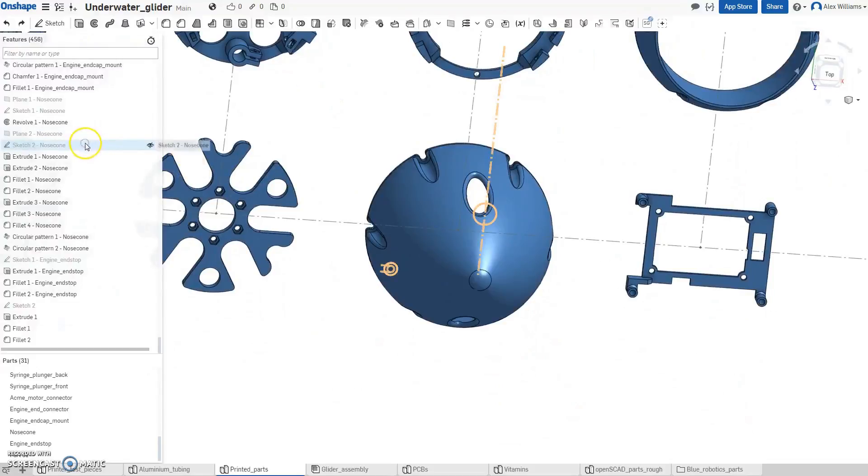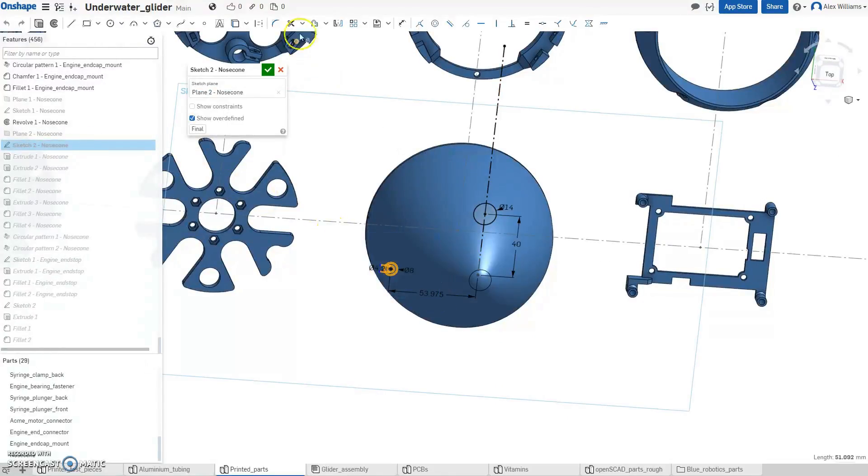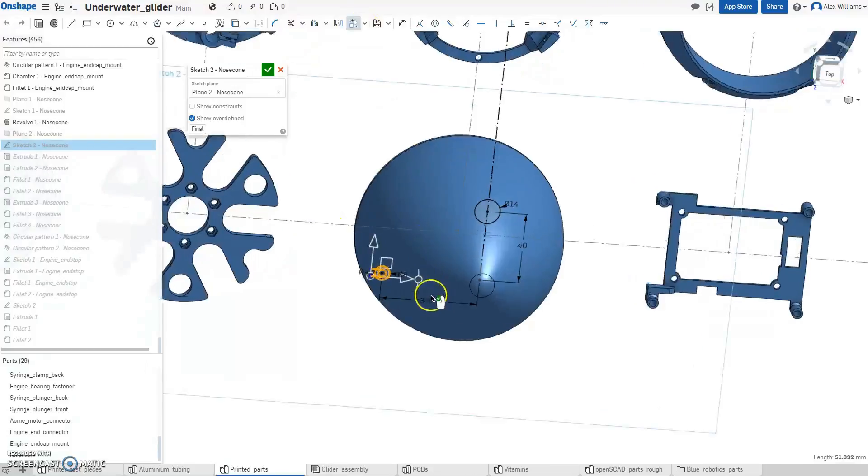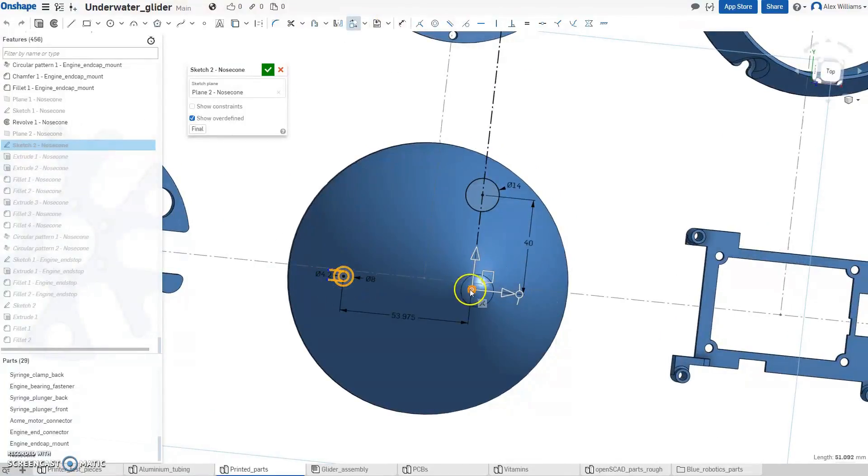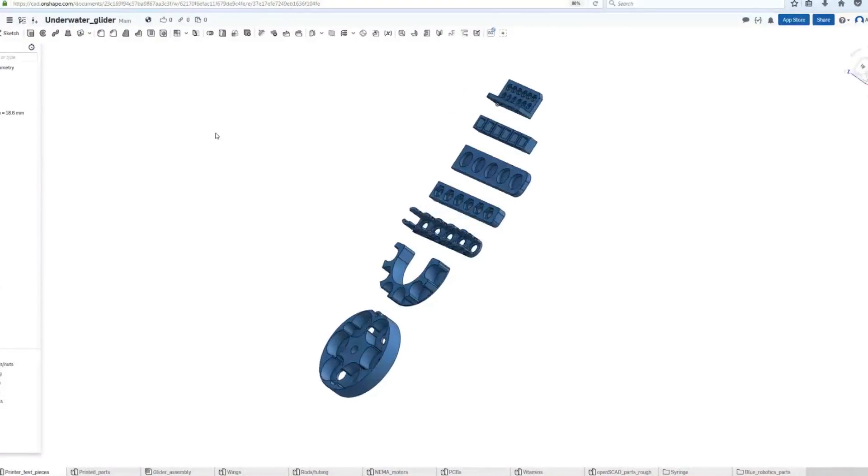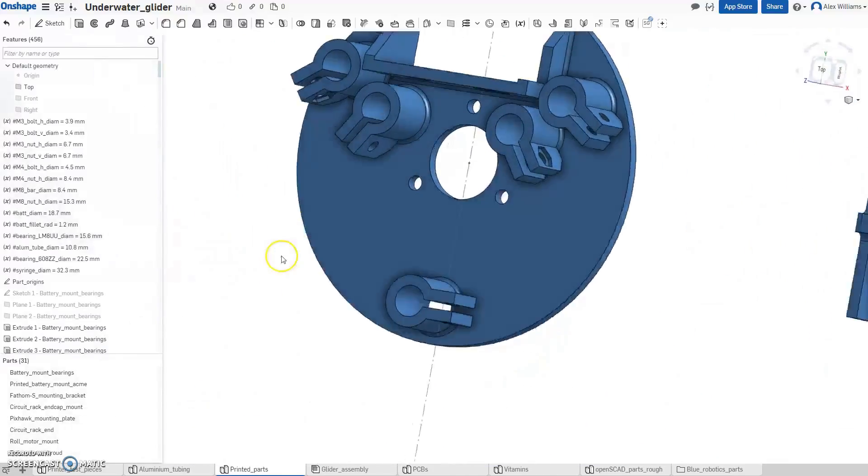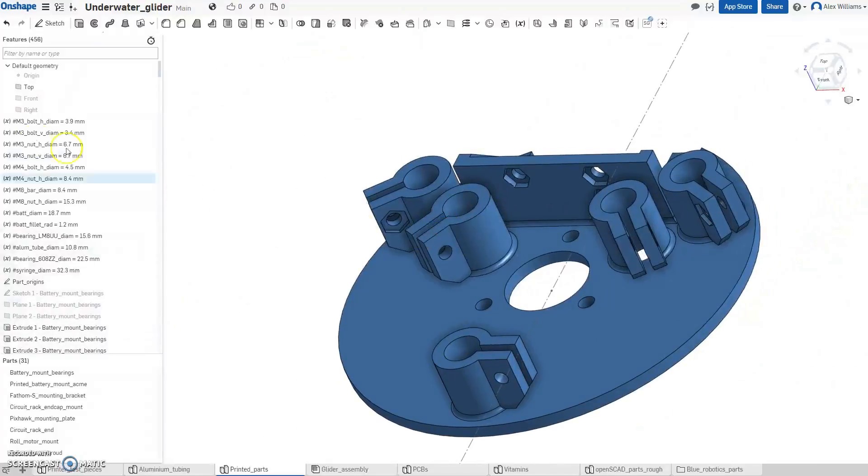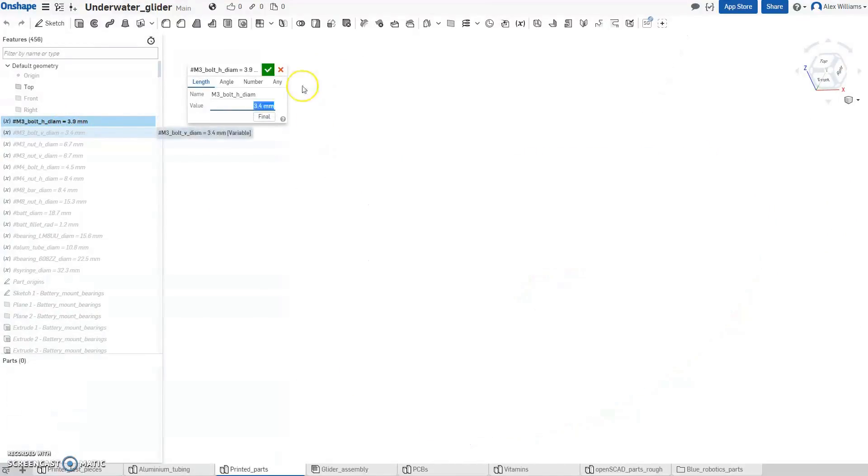The 3D printed components are modelled in both OpenSCAD and Onshape, a cloud-based CAD package that is free to use and allows for parametric designs. I have utilised this so you can print a series of test prints and enter values into the Onshape document according to the dimensions of the test prints, and this generates a set of parts which are best suited to your printer to minimise post-processing.